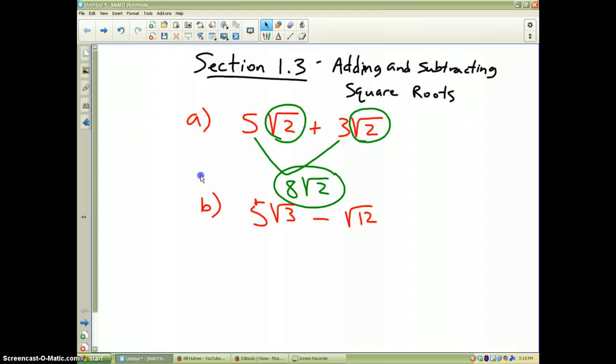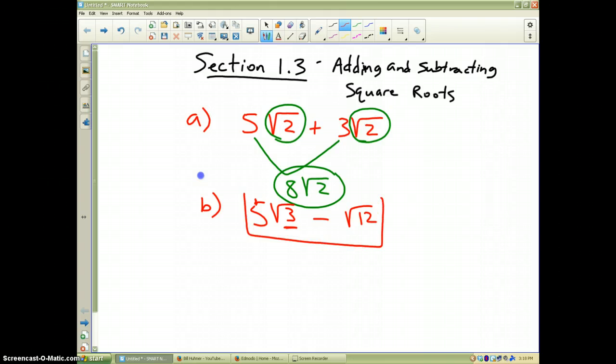Obviously we all know square root of 3, 3 is a prime number so you can't break this down any further. So the only way that we are going to be able to do this particular problem is if this second piece has a square root of 3 in it.